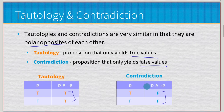Tautology and contradiction are very important when it comes to specific types of quantifiers and proofs — things we'll discuss in later videos. For now: tautology always yields true, contradiction always yields false.